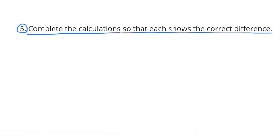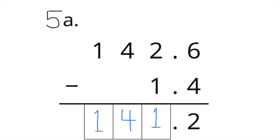Number 5: Complete the calculations so that each shows the correct difference. Part A: 142.6 minus 1.4. That equals 141.2.